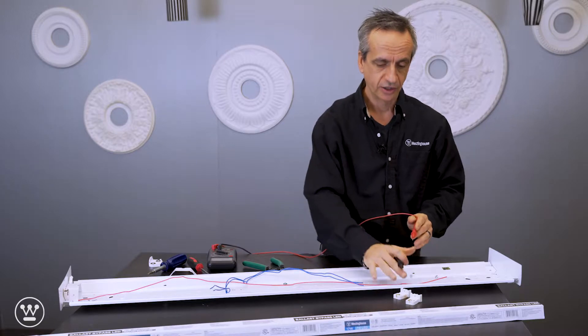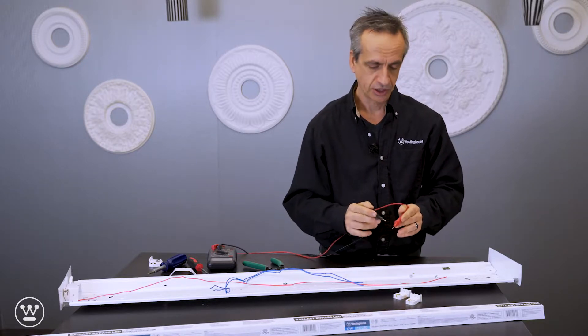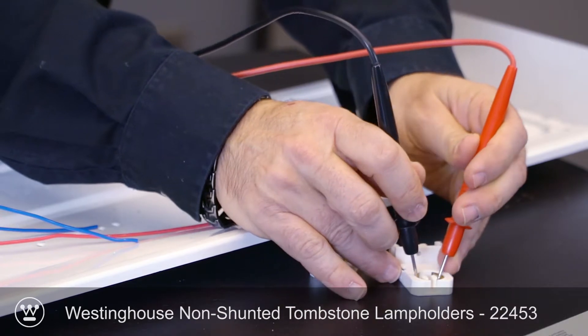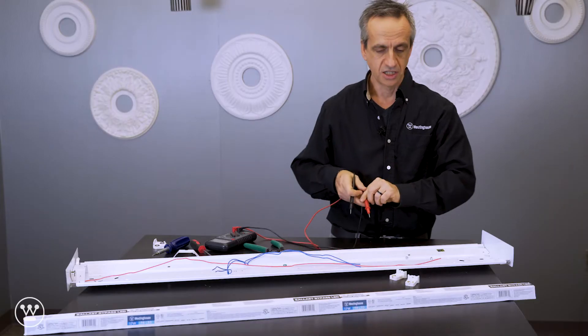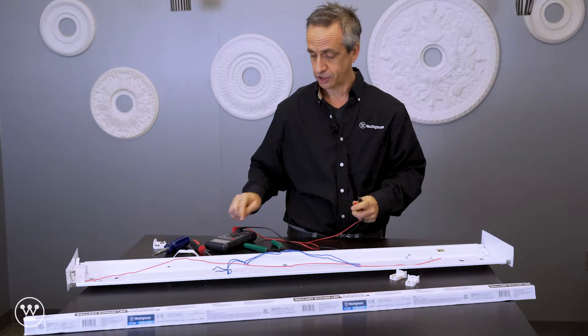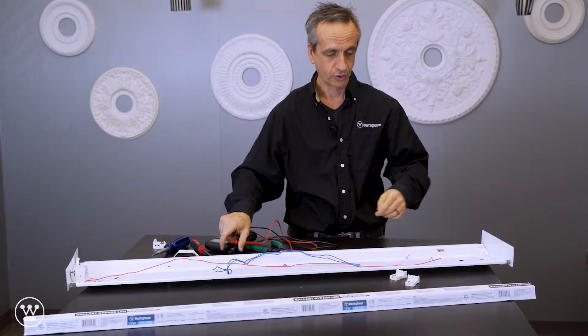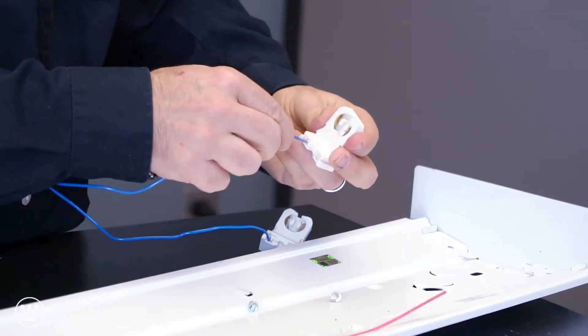We want to make sure that the replacement sockets are non-shunted. We're checking for continuity. And these tombstones appear to be non-shunted. So we'll proceed with wiring up these tombstones.